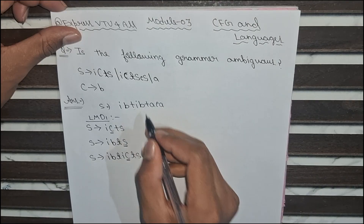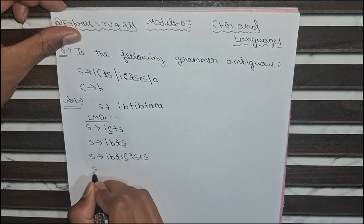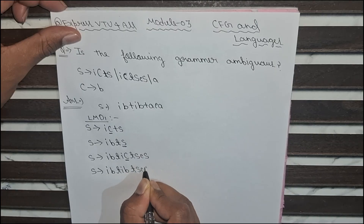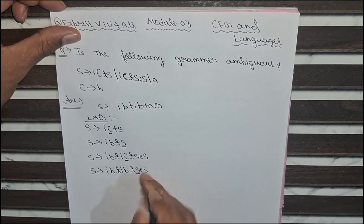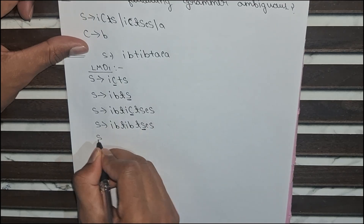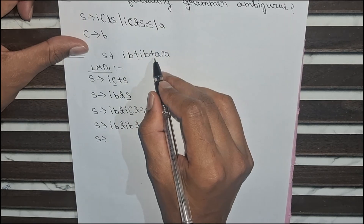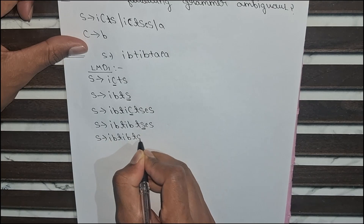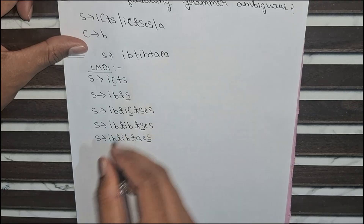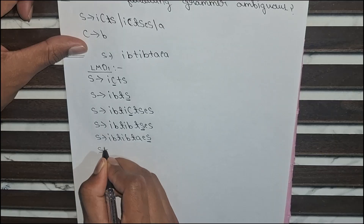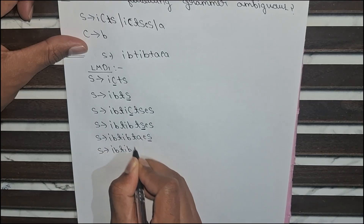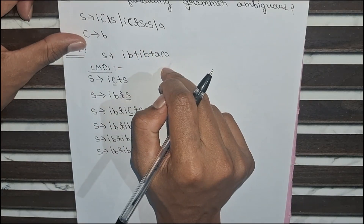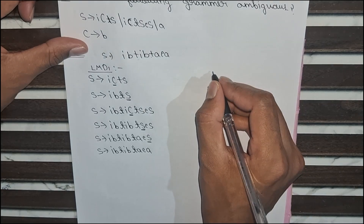Now I want b, so we substitute c as b here: S = i b t i b t S e S. From the left this variable comes, and we substitute S as a because I wanted a after this t. So we get i b t i b t a e S. After that this S I wanted a, so I replace S with a, giving i b t i b t a e a. Now I got the string which I took in the previous step.